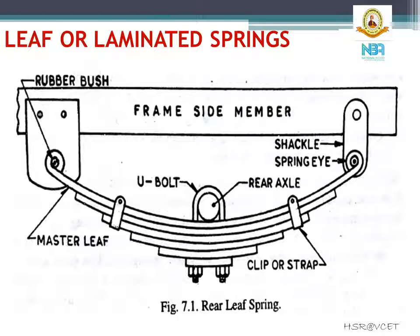Semi-elliptical leaf springs are almost universally used for suspension in light and heavy commercial vehicles. The figure shows a rear axle leaf spring of semi-elliptical type. The spring consists of a number of leaves called blades, which vary in length. The composite spring is based on the theory of a beam of uniform strength. The longest blade has eyes on its ends and is called the master blade. All the blades are bound together by means of steel straps. The spring is supported on the front or rear axle by means of a U-bolt. One end of the spring is mounted on the frame with a simple pin, while the other end is connected with a shackle.